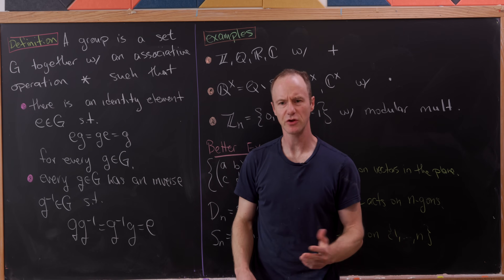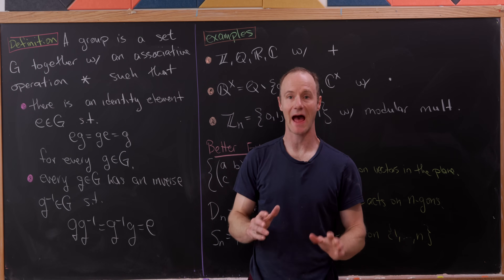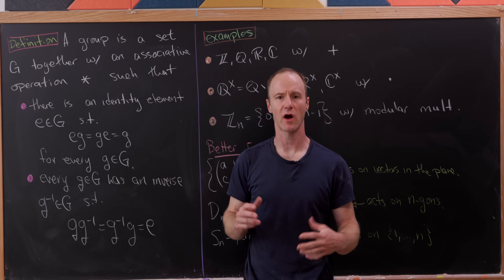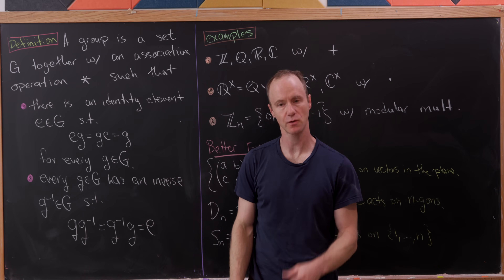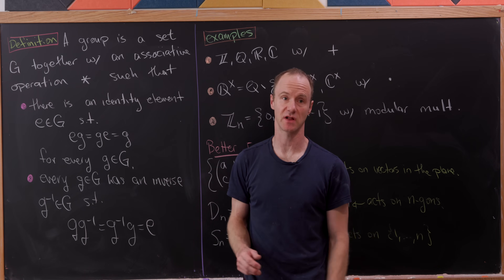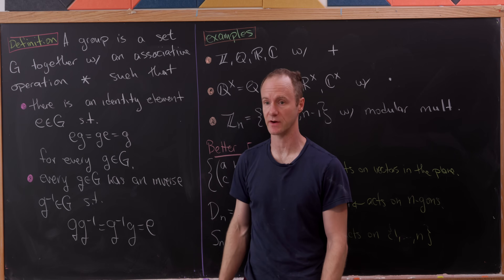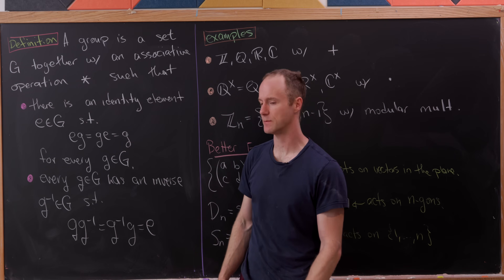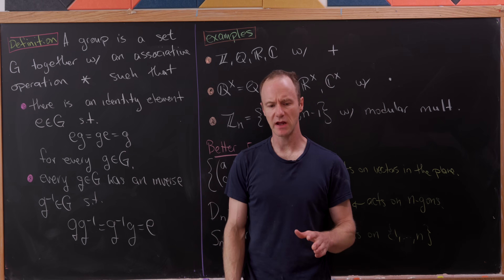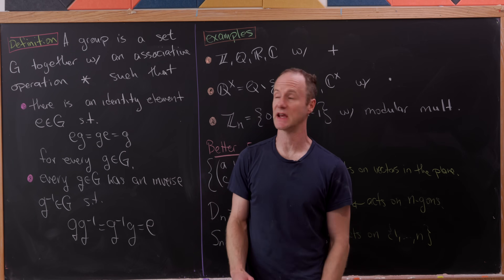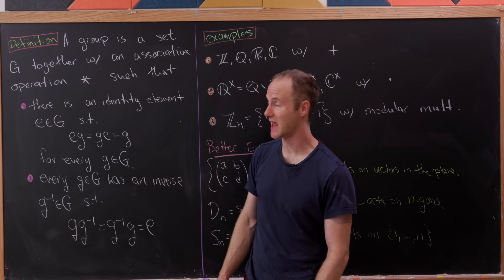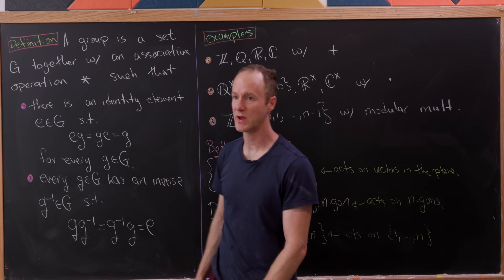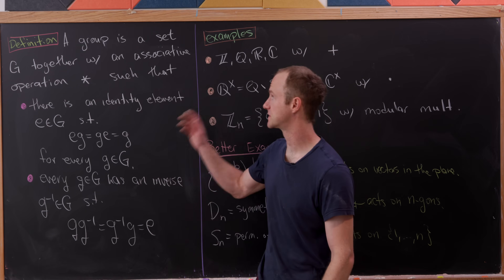Today I want to look at a classic result that you might learn in an abstract algebra class — more properly, a group theory class. It's called Cauchy's theorem. But in order to really understand what it's saying, let's look at the definition of a group and then some examples of groups.